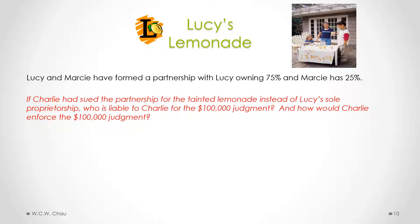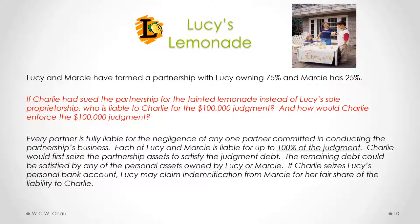Let's say Lucy and Marcy have formed a general partnership with Lucy owning 75% and Marcy owning 25%. And Charlie, the guy who drank the bad lemonade, sued the partnership for the tainted lemonade. Who is liable to Charlie for that $100,000 judgment, and how would Charlie enforce the judgment? Please pause the video to consider these questions.